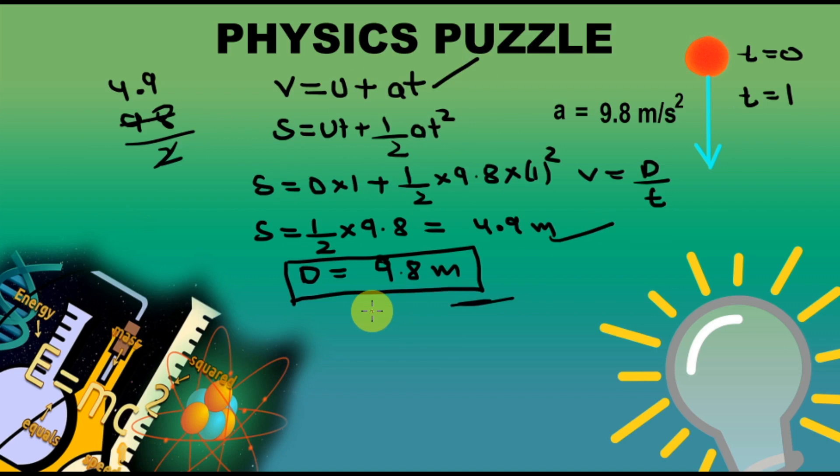You have to answer in the comments, why this is happening, why this formula is giving us half of the distance traveled, which is calculated in this formula. What are we doing wrong in here? We will discuss the answer of this physics puzzle in the comments down below.